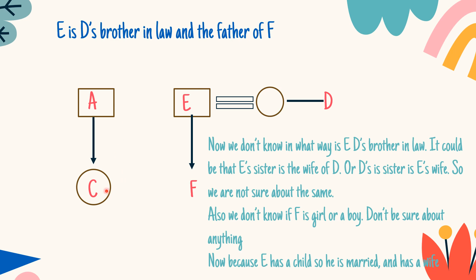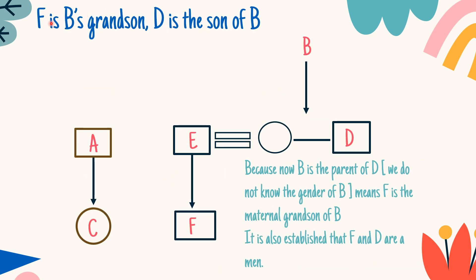In our new slide, E's wife is D's sister, and E has a child whose gender is not known. Now, F is B's grandson and D is the son of B. If B were the maternal grandfather or grandmother, then D couldn't have been the son — E would have had to be the son. But E and D are not real siblings. So B is either the maternal or paternal grandparent. Because D is the son of B, it's clear that B is the maternal grandparent of F.